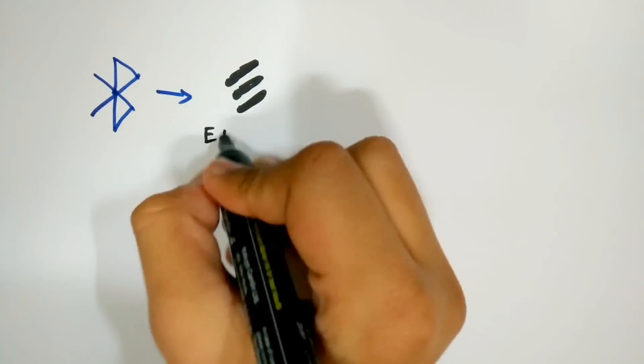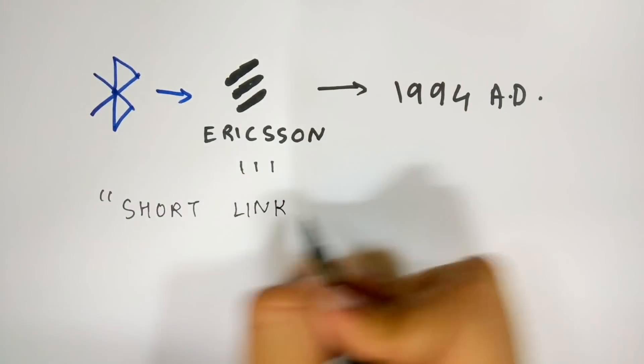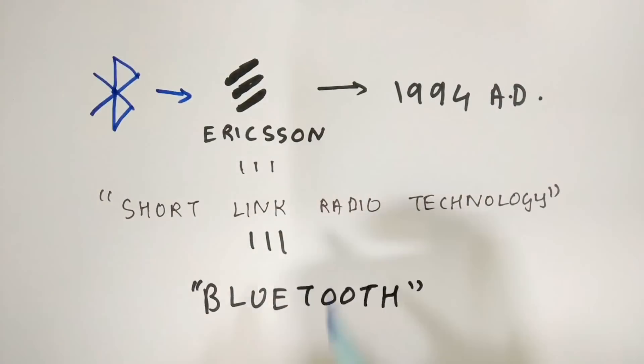Bluetooth was developed by the telecommunication company Ericsson in 1994 and was initially called short link radio technology until 1997 when it got the name Bluetooth.